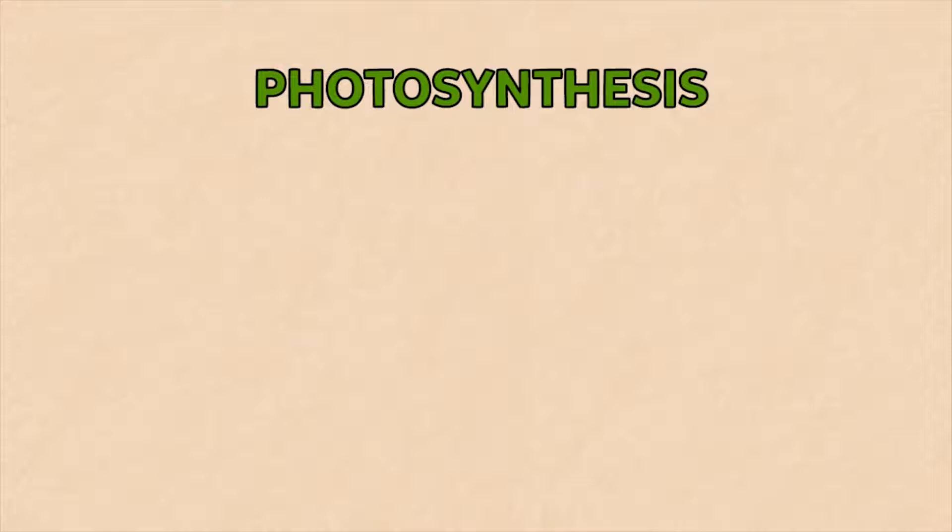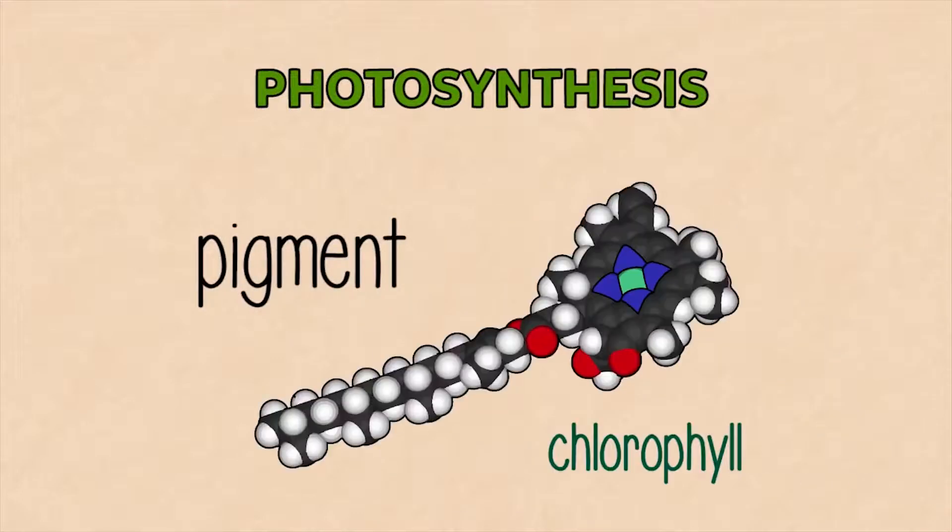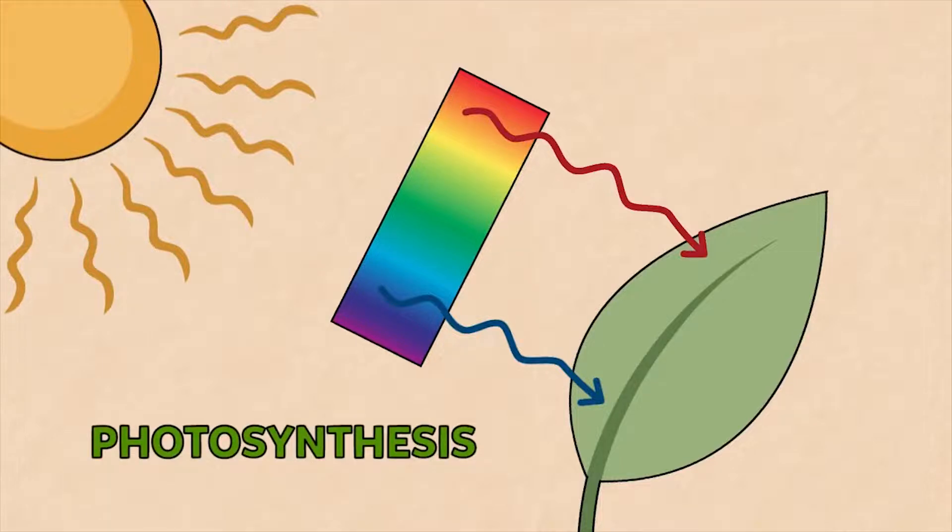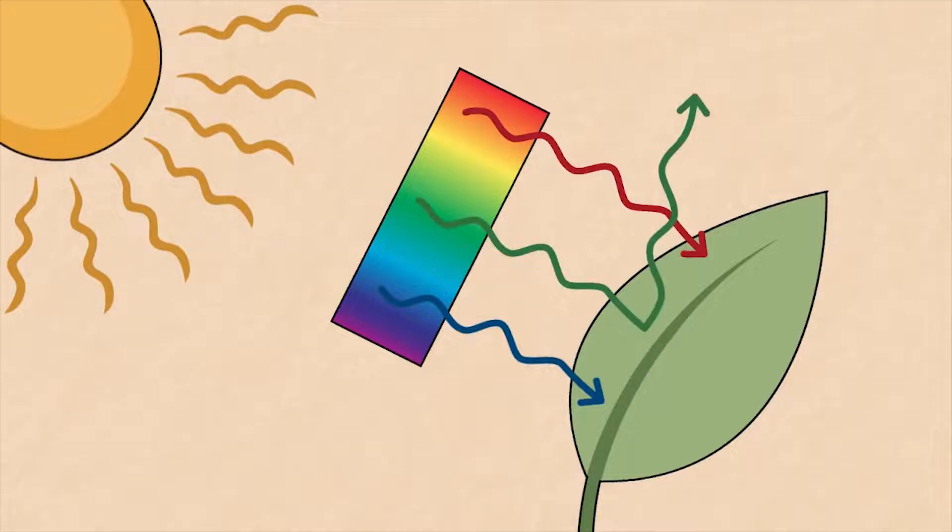Photosynthesis also needs a pigment called chlorophyll. The active site is a magnesium atom, colored green in this model, which absorbs blue and red light from the sun spectrum to drive the photosynthesis reactions, leaving the green light to be reflected. This is what makes the leaves look, well, green.